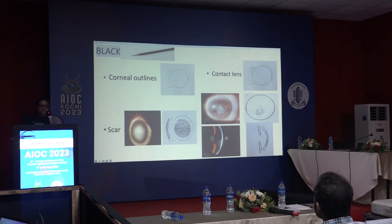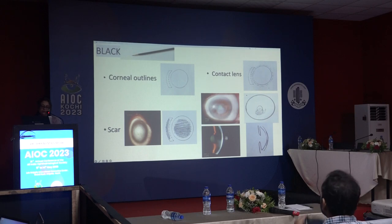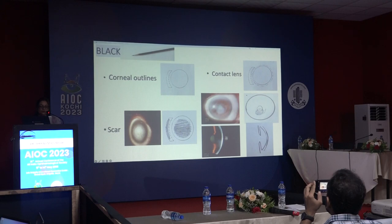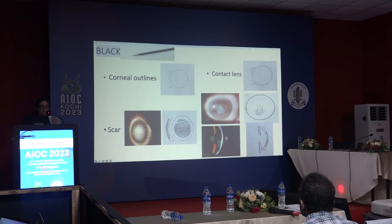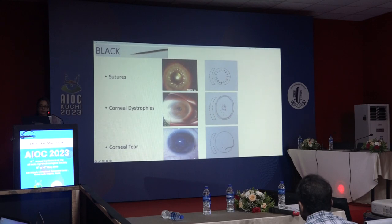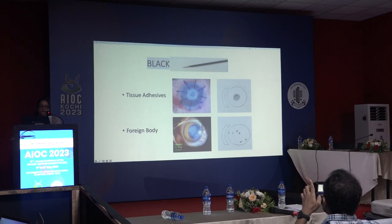Color coding: Black is used for corneal outlines, contact lenses (interrupted line around the periphery), scars with varying shades depending on opacity grade — darker for leukomatous opacity, lighter for nebula/macular opacity. Also show depth of opacity and thinning in slit view with black. Black is also used for sutures, corneal dystrophies, corneal tears, tissue adhesives, and foreign bodies.